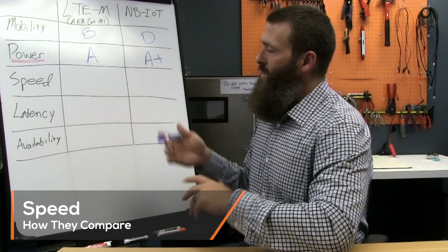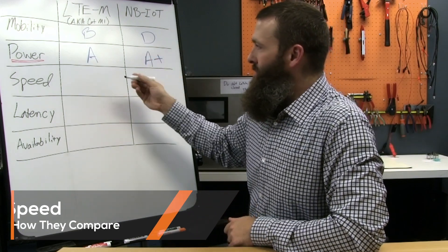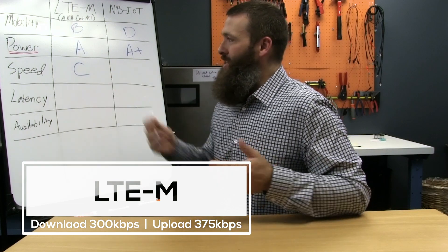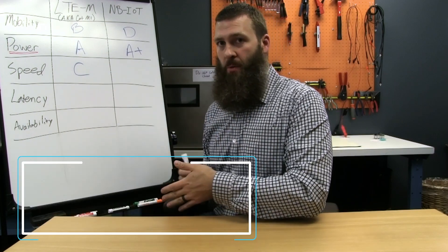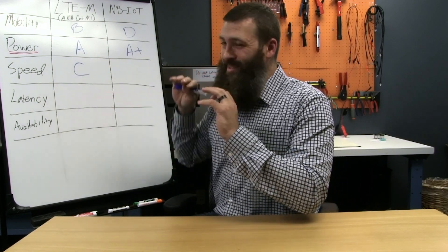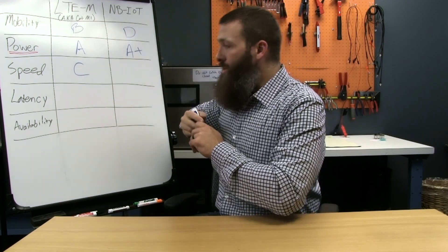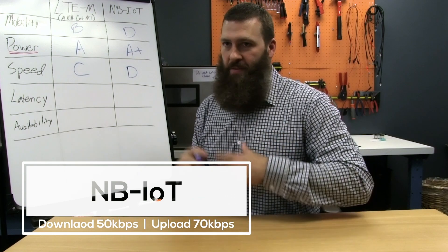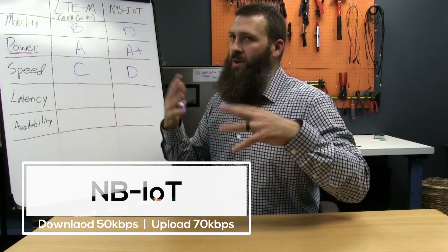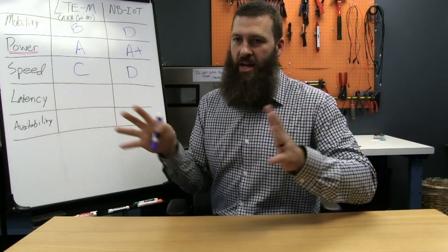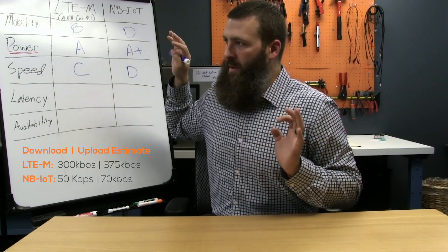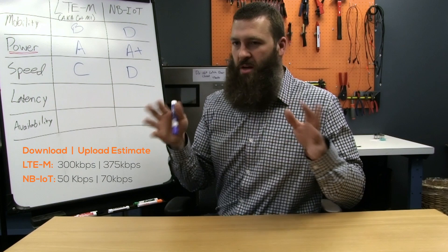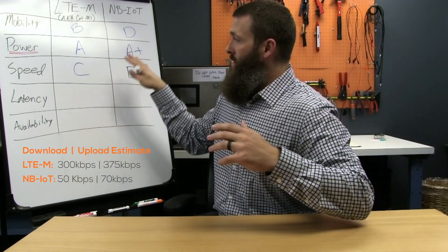Speed. LTE-M gets a C for speed. It's not fast, it's not meant to be fast, but it's pretty good compared to a lot of other LPWAN radio protocols. NB-IoT is really very slow — I'm going to give it a D. It's not unusably slow, it doesn't fail, but it is extremely slow. Rough figures: LTE-M is somewhere around 300 kilobits per second theoretically; NB-IoT is somewhere around 50 kilobits per second. That's the scale at which they differ in speed.